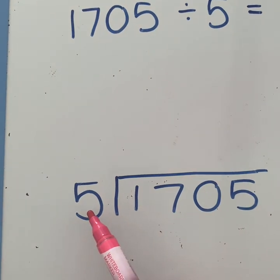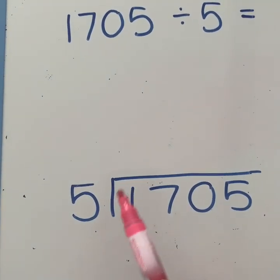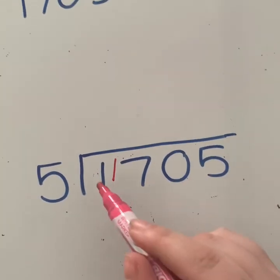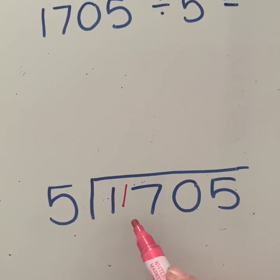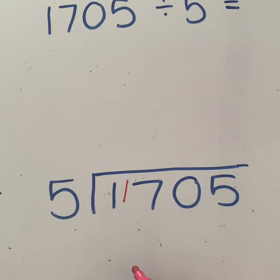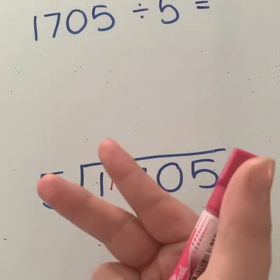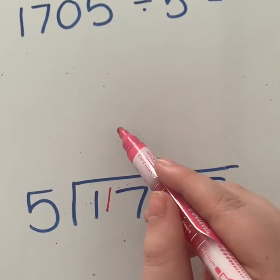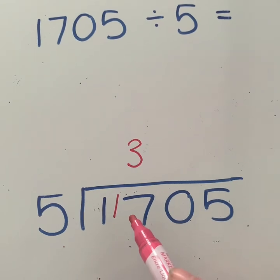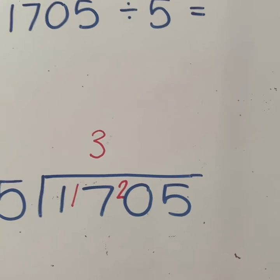So we see how many fives go into 1. None. 1 is smaller than 5. So I'm going to move over my 1. And now I'm looking at how many fives go into 17. I can now use my 5 times table. So I've got 5, 10, 15, 20. 20 is too big. So we've got 3. But it wasn't 3 exactly. So we stopped at 15, which means that we have 2 moved over.